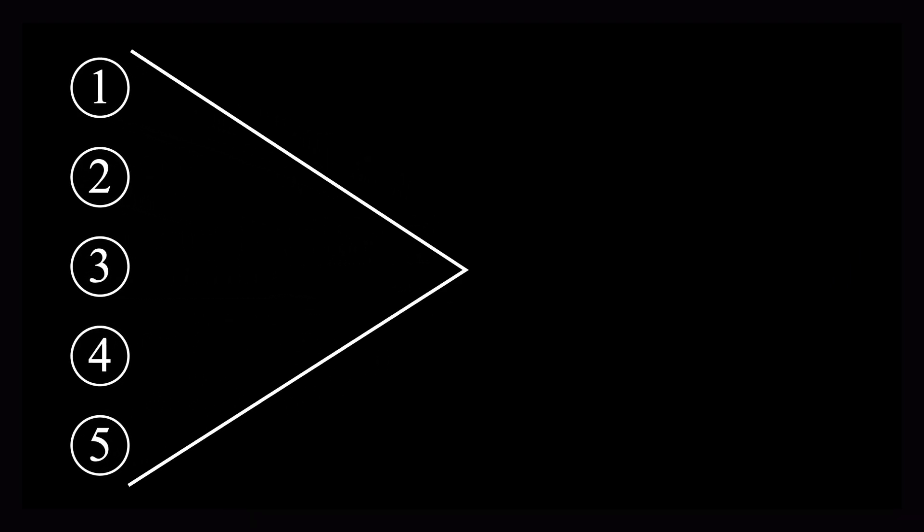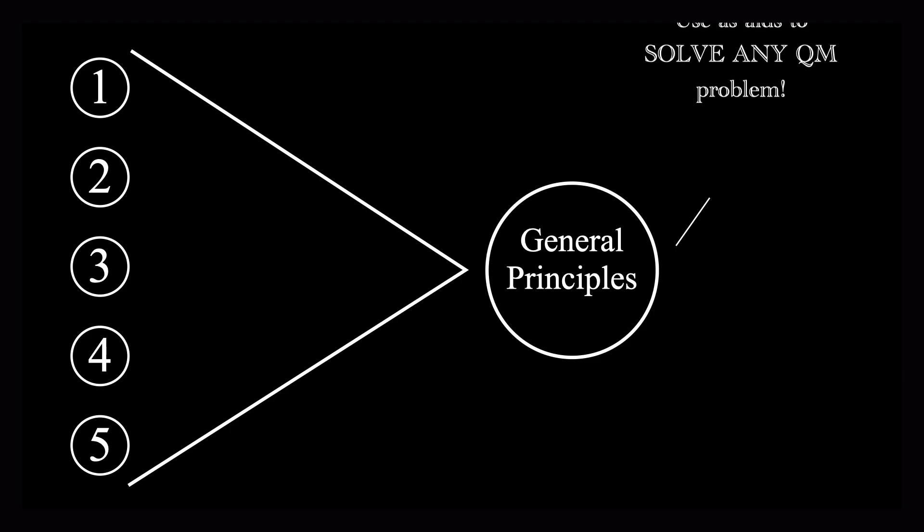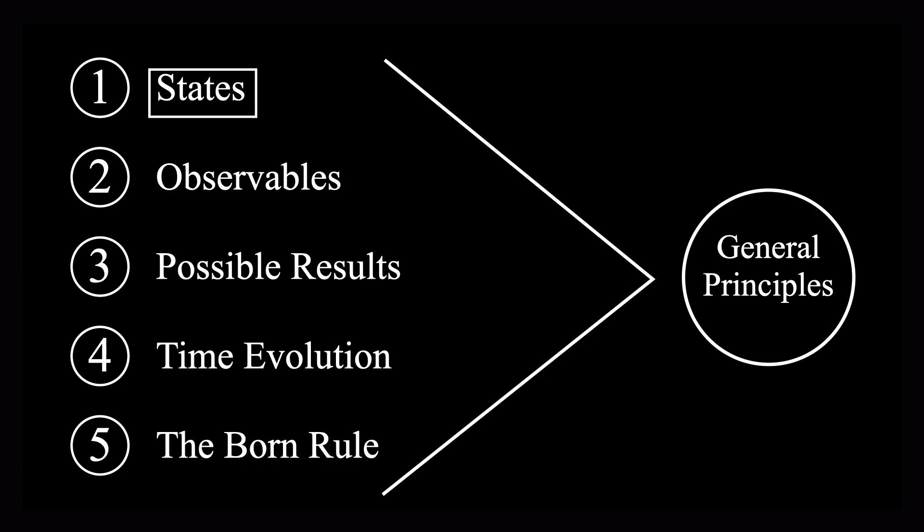Now, before I begin, I'd like to note that these axioms are not meant to be understood in the mathematical sense as rules from which every result logically follows. Instead, I recommend conceptualizing them in your mind as the general principles of how quantum mechanics works. These principles will range from covering basic physical concepts like the state of a system, to more abstract concepts like the Born rule.